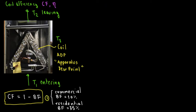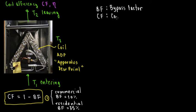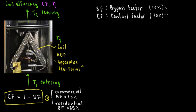Formula number 2 is related to the bypass factor. So, bypass factor BF measures how inefficient the coil is, and contact factor CF measures how efficient it is. For example, if the coil has a 10% bypass factor, that means 10% of the air is not in contact with the coil, so the contact factor is going to be 90%.